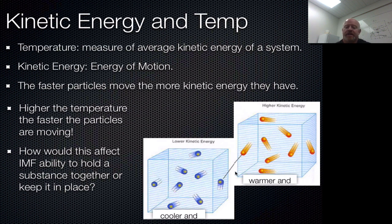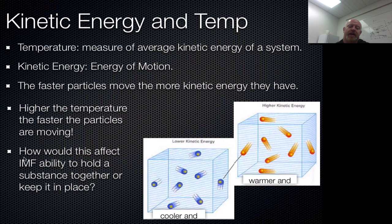Looking at these two diagram boxes: under cooler conditions, you have lower kinetic energy, which means less temperature, and particles are going to be moving slower — notice the tails are made a little shorter. Over here, under warmer conditions, we have high kinetic energy, so they are warmer and moving faster. Now let's relate this back to intermolecular forces (IMF). If you have intermolecular forces trying to hold particles together, and particles move faster at higher temperatures, how does temperature affect IMF's ability to hold things in place?